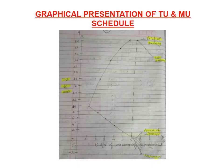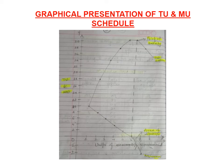Now let us see the graphical presentation of the TU and MU schedule. On the y-axis, TU and MU are measured, and on the x-axis, units of commodity consumed are measured. The TU curve slopes upward from left to right, while the MU curve slopes downward from left to right. When the TU curve is at its maximum, the MU curve touches the x-axis at zero — giving the point of satiety. After that, the TU curve falls and the MU curve goes into the negative area, known as the disutility region, shown by shaded lines.